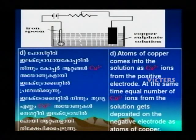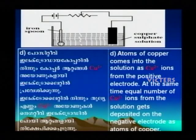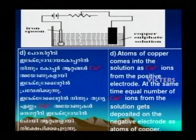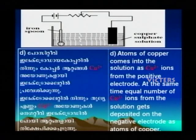Atoms of copper will be coming out from the positive electrode into the solution as Cu2+ ions. In the same interval of time, an equal number of Cu2+ ions will migrate from the solution and get deposited on the negative electrode. Since the number of Cu2+ ions entering the solution is equal to the number leaving the solution in the same time, the concentration of the electrolyte remains unaffected.